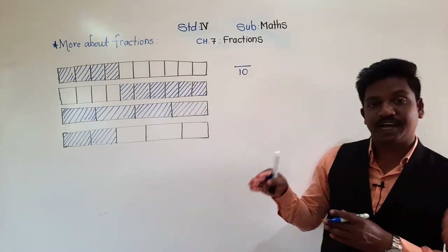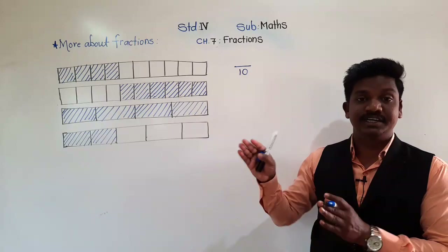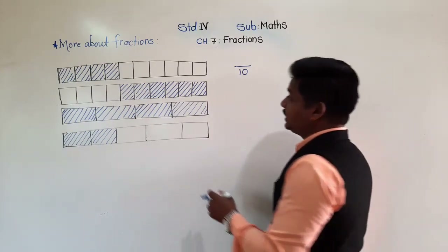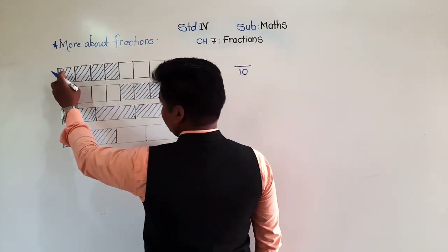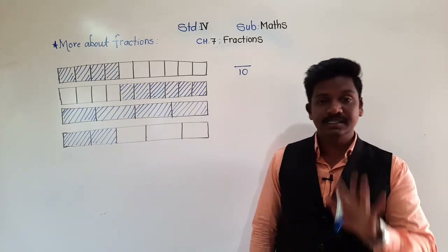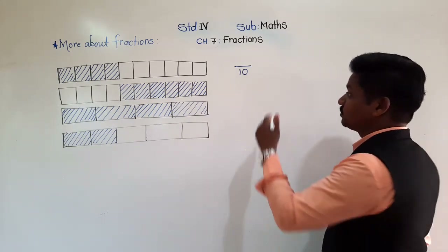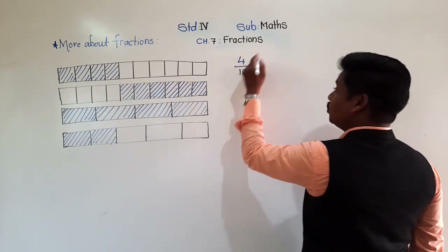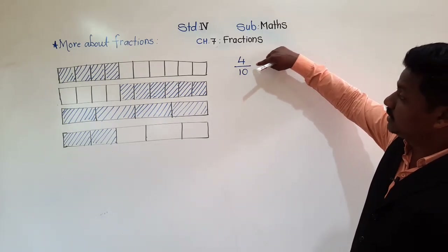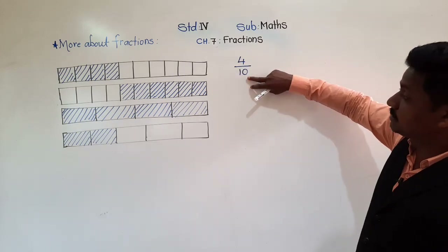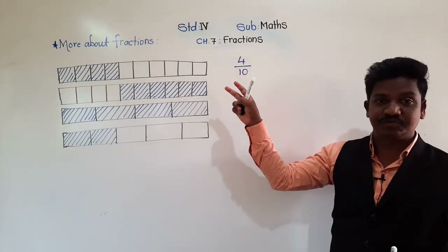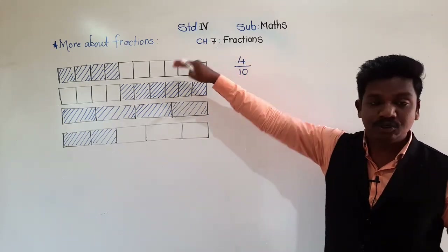Now we have to write the fraction for the shaded portion of that strip. Out of 10 equal parts, how many parts are shaded? 1, 2, 3, and 4. Out of 10 equal parts, 4 parts are shaded. So 4 will be written above the line. So this 4, above the bar, and 10 below the bar — this is the form of fraction for the shaded portion of this strip.